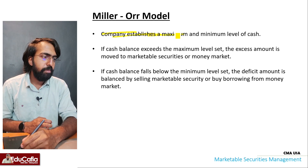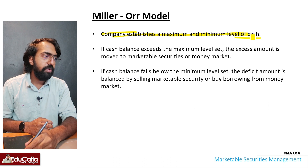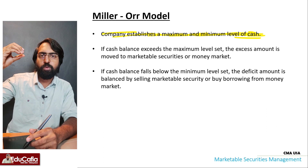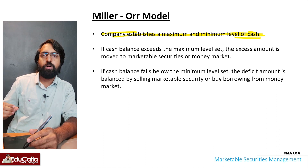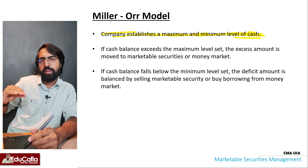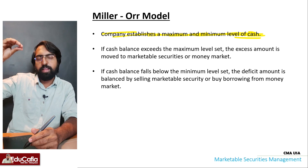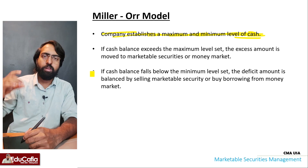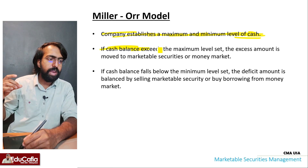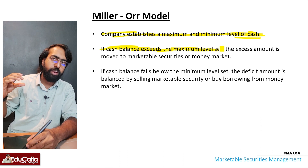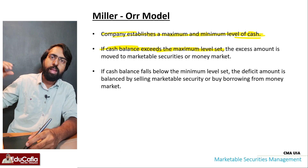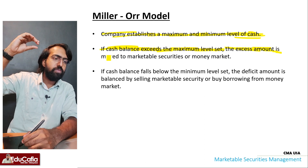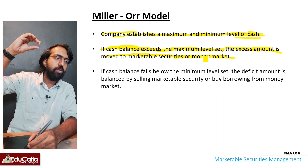Now the Miller-Orr Model. The company establishes a maximum and minimum level of cash. If the cash balance exceeds the maximum level, the excess amount is moved to marketable securities or the money market.